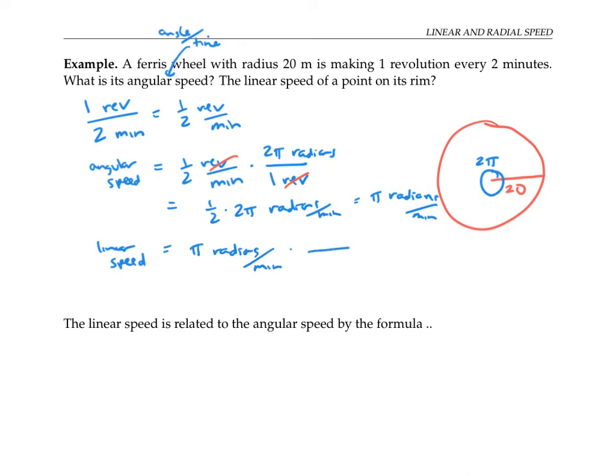So I know that when I go 2π radians, that's all the way around the circle, I'm going all the way around the circumference in distance. So that would be 2π times the radius, or 2π times 20 meters.